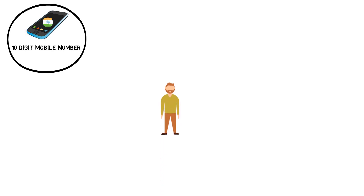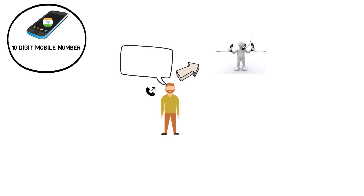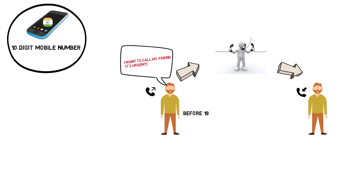Why are we talking about this? When you call your friend, the operator is connecting the call. This was the case before the 1850s — an operator would manually connect calls.